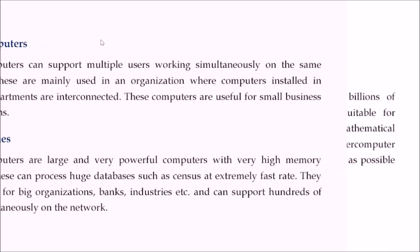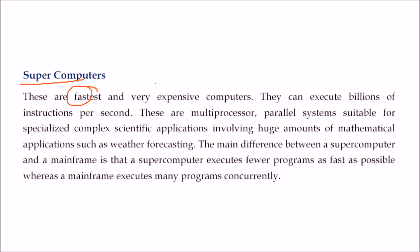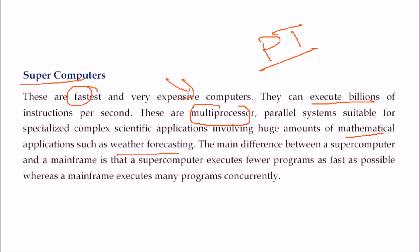Finally, super computers are the fastest and most expensive computers — they can execute billions of instructions. The fastest super computer's execution speed is around 57 to 65 petaflops. These are multiprocessor parallel systems, with thousands of processors working together, suitable for specialized complex scientific applications involving high amounts of mathematical computation, such as weather forecasting. The main difference between super computers and mainframes is that super computers execute fewer programs as fast as possible, while mainframes execute many programs concurrently.